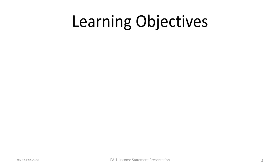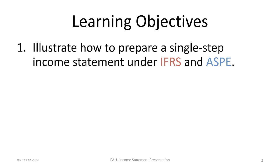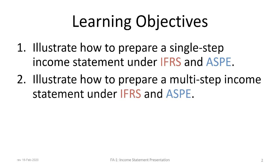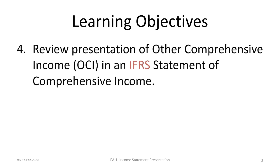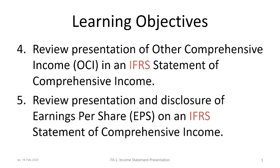This tutorial consists of five learning objectives. The first is to illustrate how to prepare a single-step income statement under both IFRS and ASPE. The second is to illustrate how to prepare a multi-step statement under IFRS and ASPE. The third is to distinguish between income statement presentation by nature versus function. The fourth is to review the presentation of other comprehensive income (OCI) in an IFRS statement of comprehensive income. Finally, we will review the presentation and disclosure of earnings per share (EPS) on an IFRS income statement or Statement of Comprehensive Income.